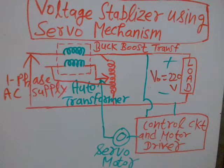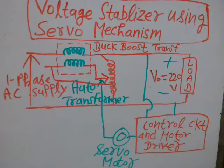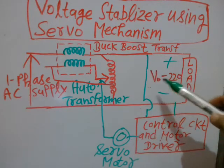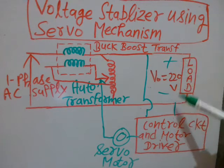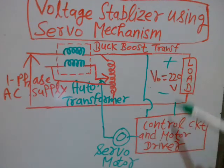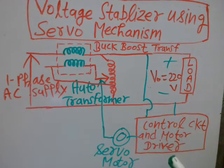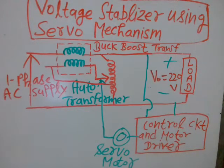Neither over-voltage nor under-voltage is desired — both must be avoided, and there is a need to stabilize the voltage across the load. As soon as a fluctuating voltage appears at the load, the control circuit senses this fluctuation and immediately sends a command signal to the motor driver, which is essentially a servo motor assembly.